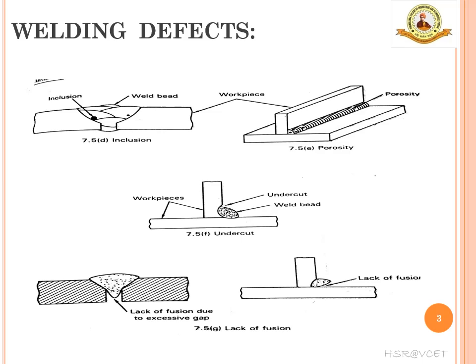The next defect is inclusion. Inclusions are usually non-metallic particles such as slag or any foreign material that does not get a chance to float on the surface of the solidifying metal, and thus gets entrapped inside the weld. Common causes are use of large electrodes in a narrow groove, low current that is insufficient for melting the metal, and high viscosity of the weld metal.